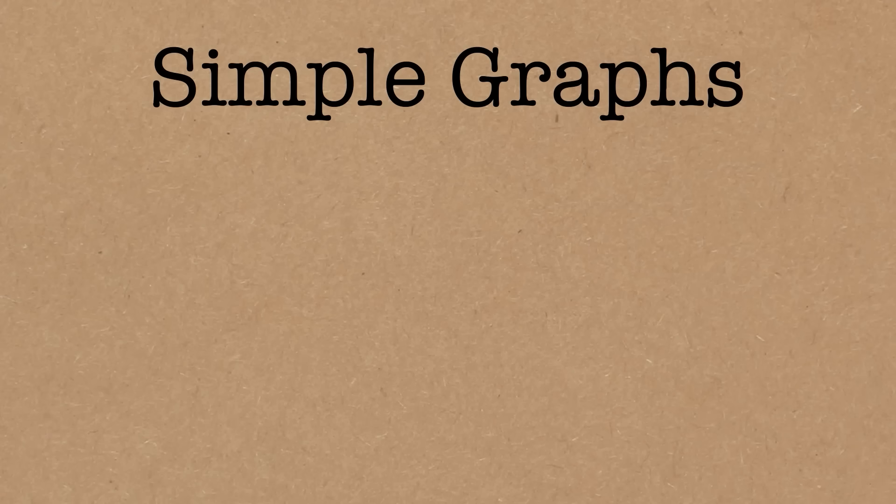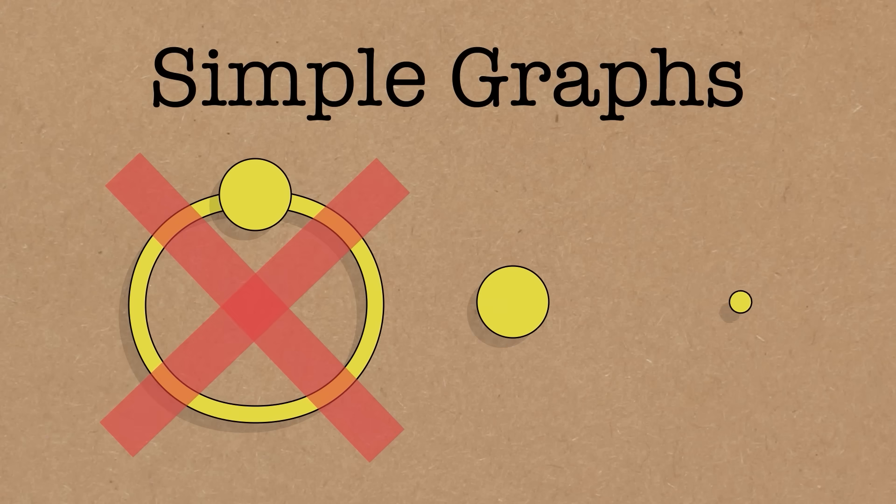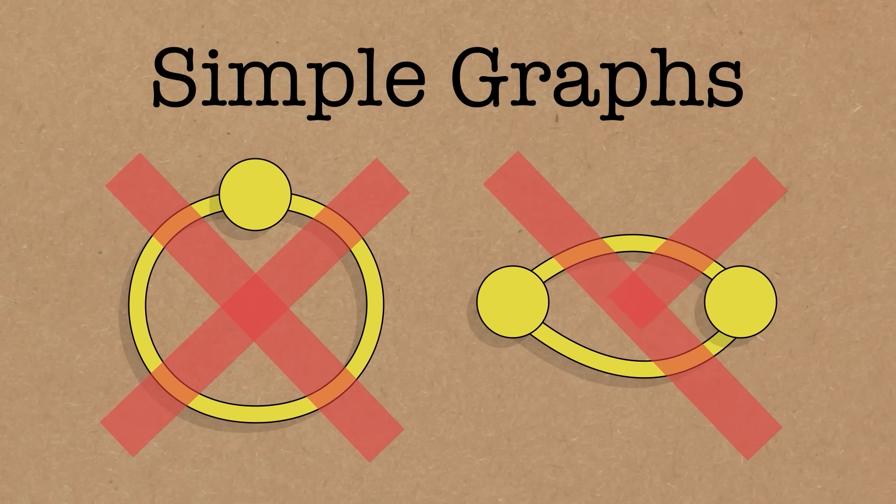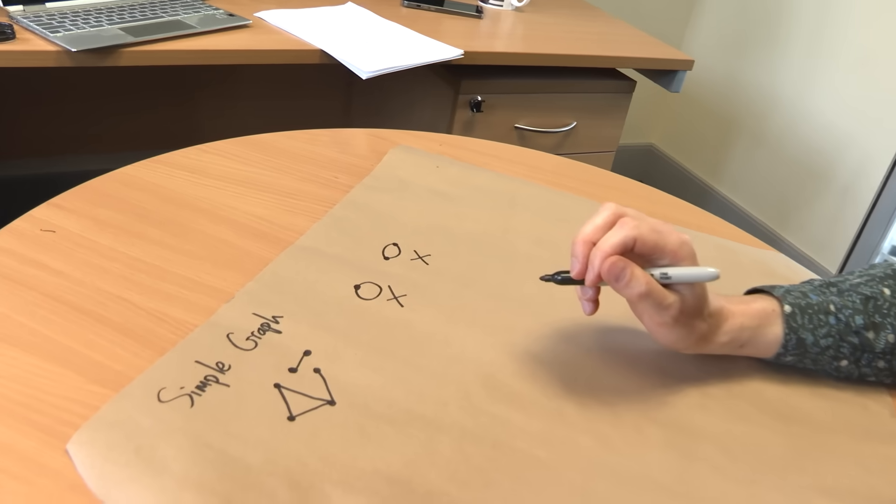So that's a graph. To make it a simple graph, we have to impose a couple of extra rules. One is that you're not allowed to have one node joined to itself by an edge. And the other thing is we're not allowed to have two nodes joined by parallel edges. Any two nodes are joined by at most one edge. So that's what a simple graph is.